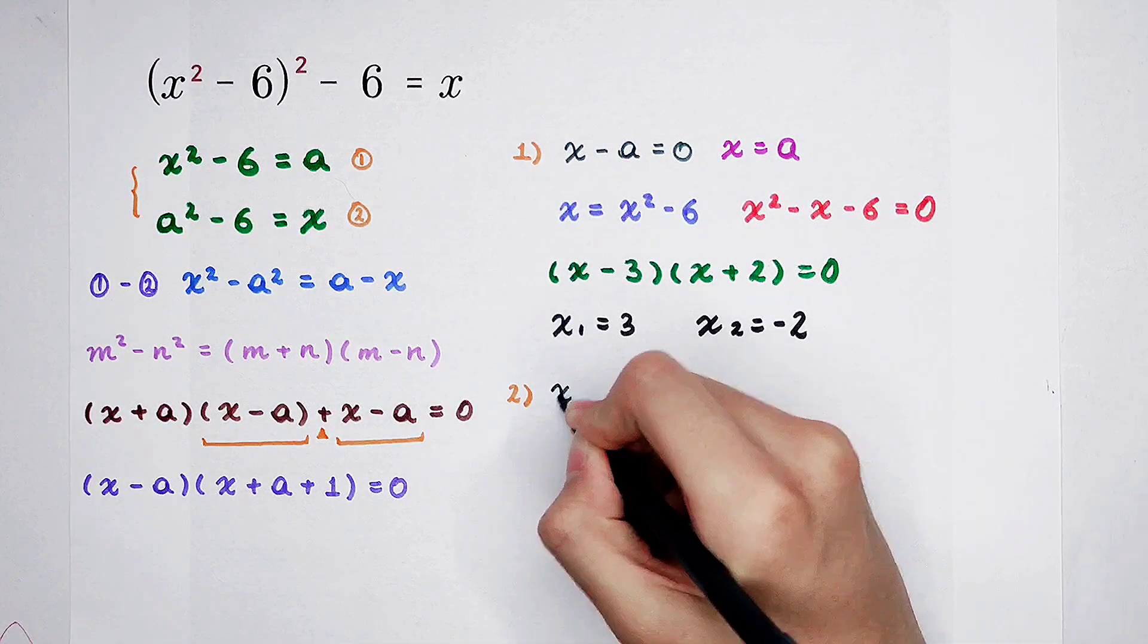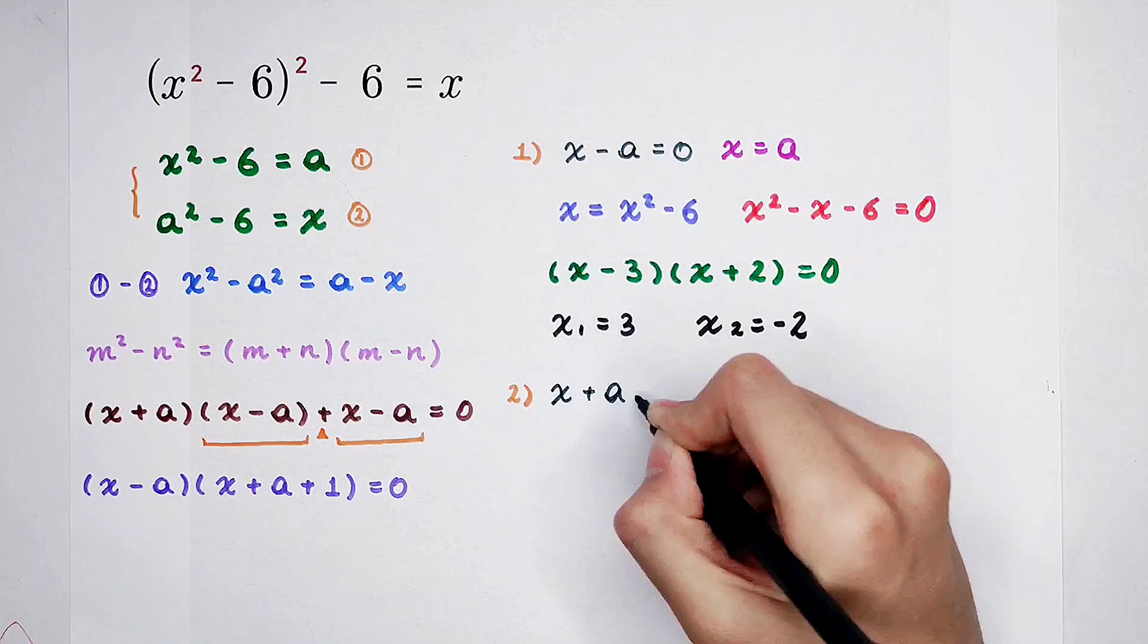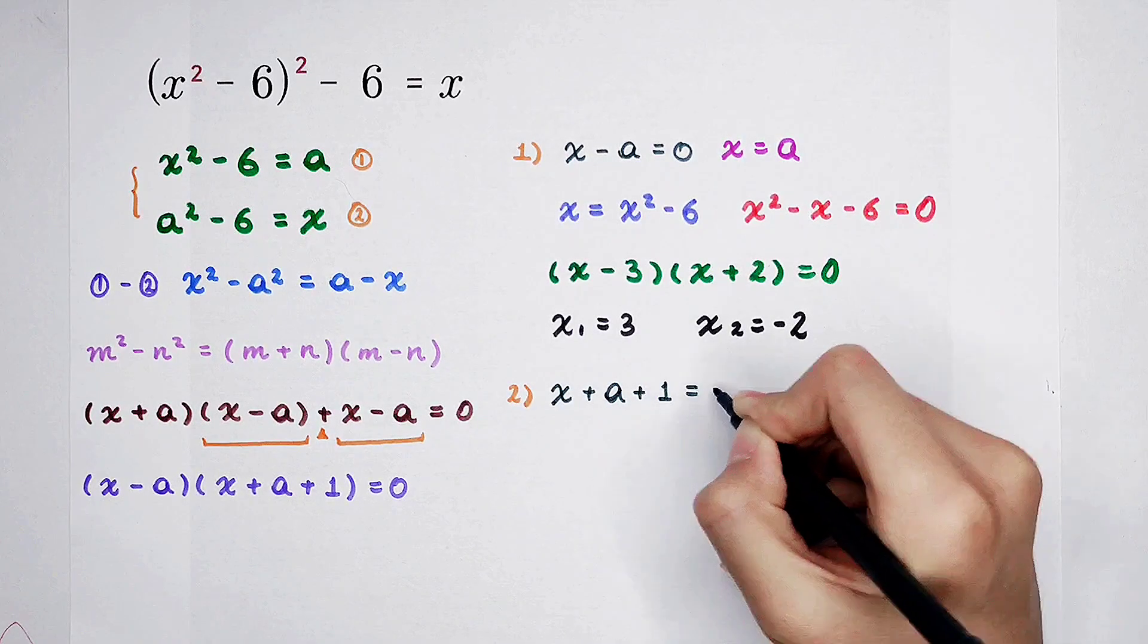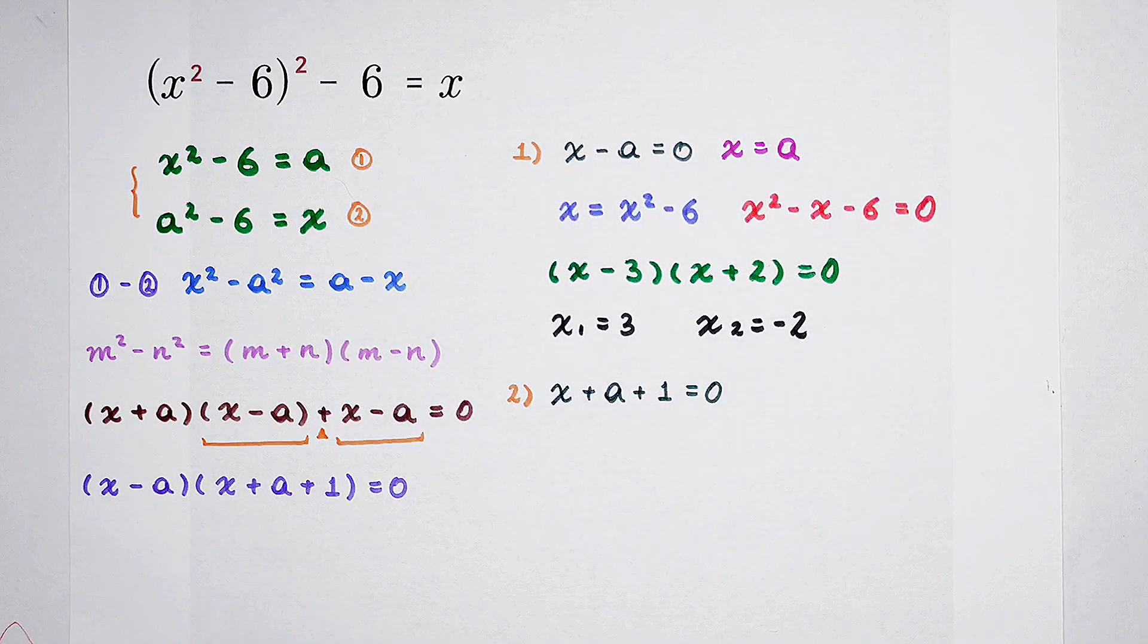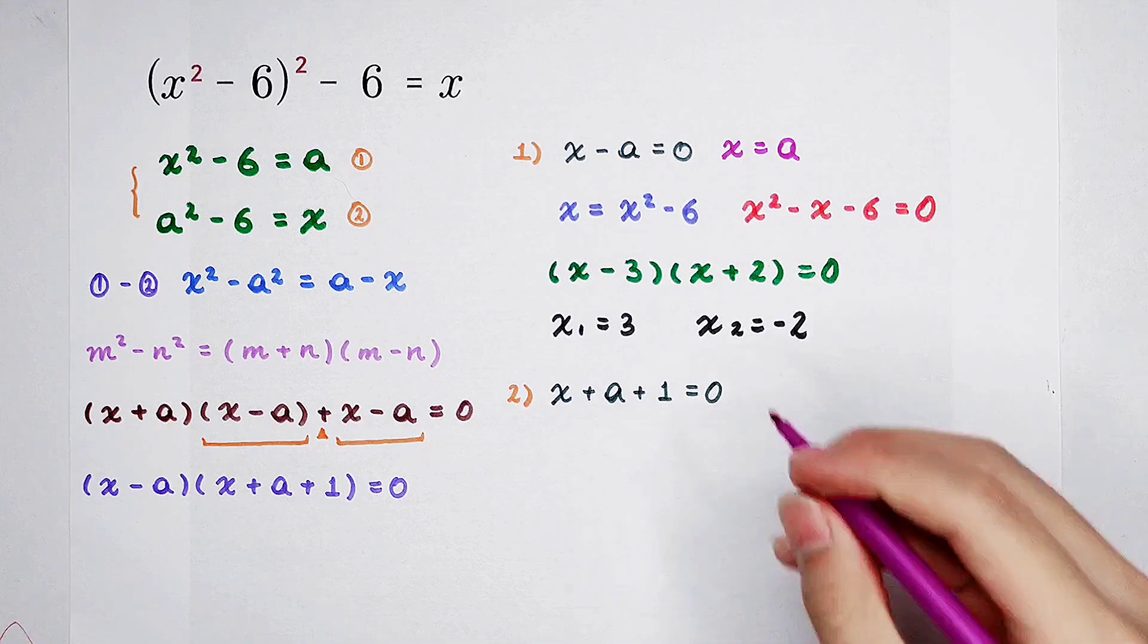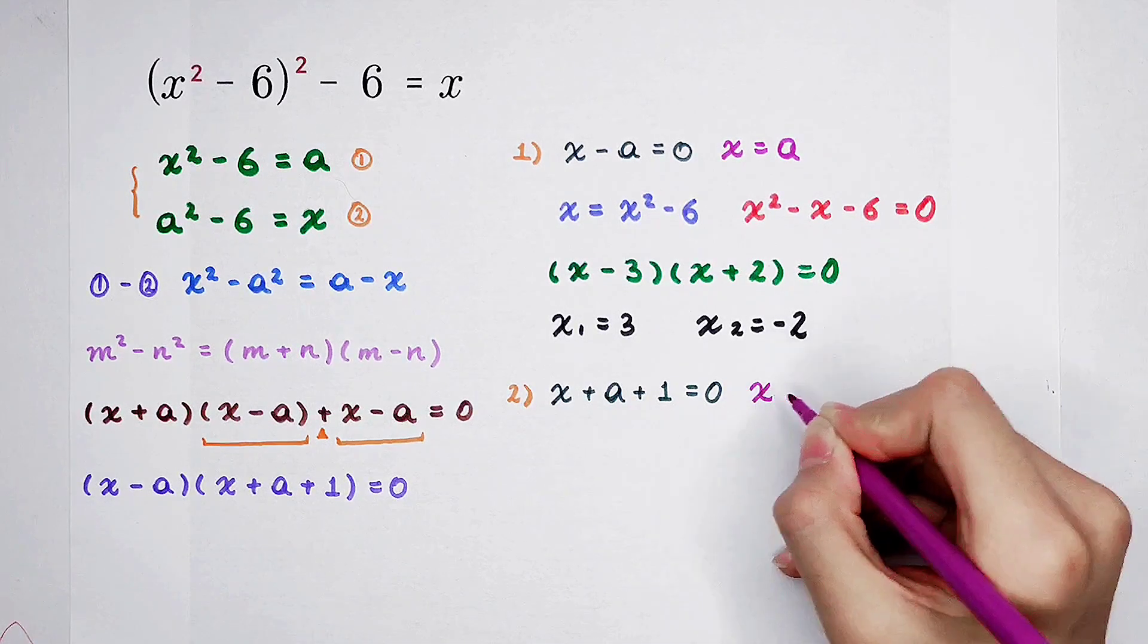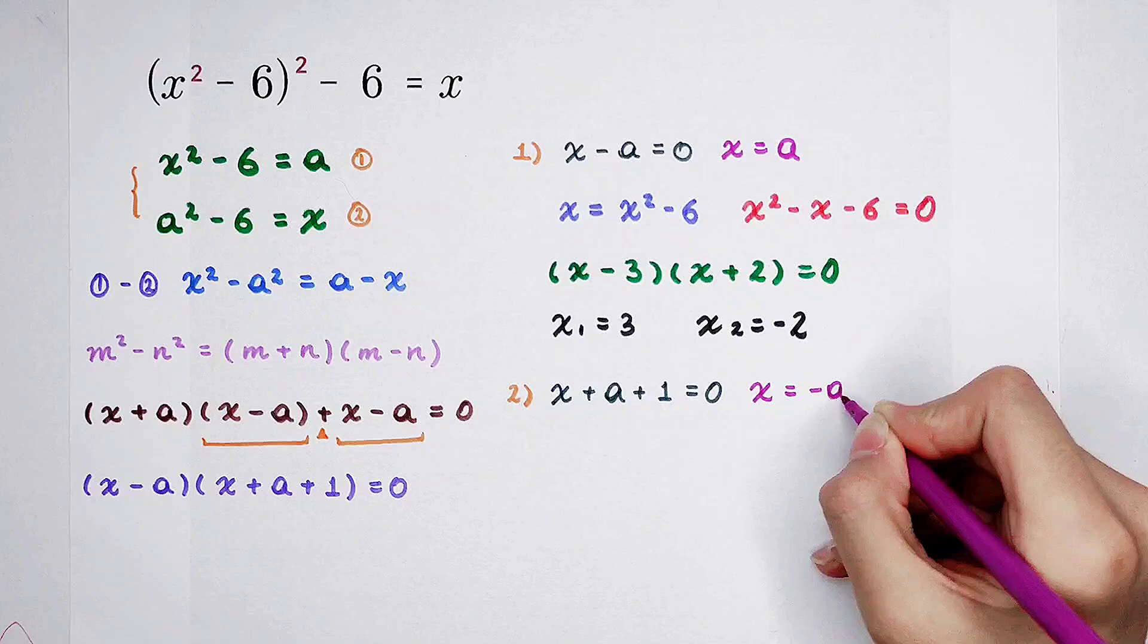Now the second case. x plus a plus 1 is zero. And this time, x is not equal to a, but negative a minus 1.